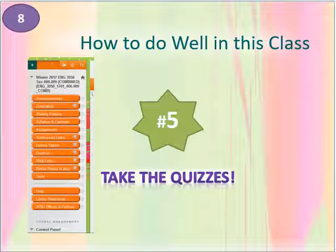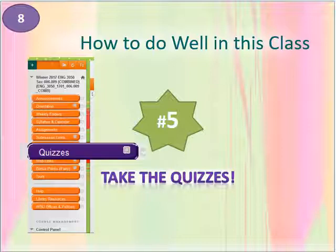Also, take the quizzes. They start out very easy and do get more complicated, and they add up to 5% of your grade — which means, mathematically speaking, that if you don't take the quizzes, you're not at all likely to get an A in this class, since the cutoff for an A is 93 of 100 points.